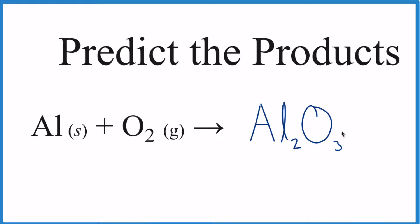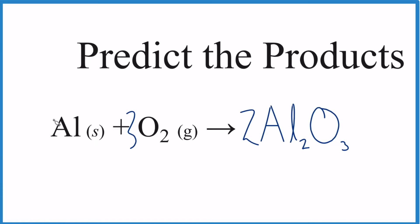Let's balance it. We'll make this oxygen number even by putting a 2 here. Two times 3 is 6, so I put a 3 here. Two times 2 is 4, so I put a 4 here, and that's balanced. There's a link at the end of this video on how to balance equations if you need help.